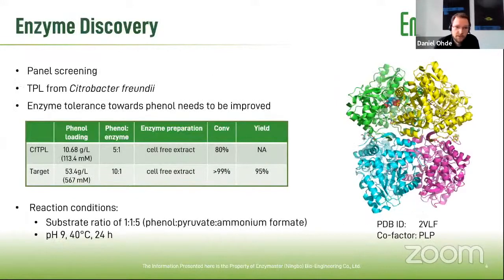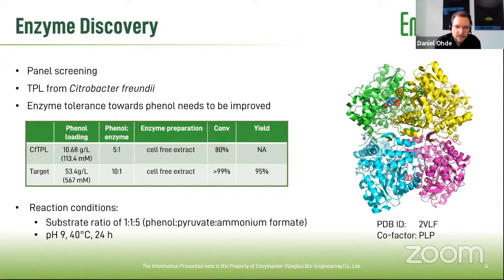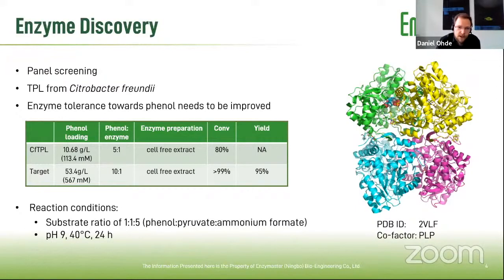The first thing we did was perform enzyme screening to find suitable enzymes. We found one enzyme from Citrobacter freundii. It showed some conversion, but the yield was basically not detectable that much, but we chose to use this as a backbone to perform our protein engineering. We have certain targets: the phenol loading should be increased five times to at least around 50 grams per liter.